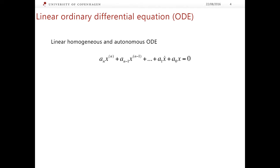This equation is homogeneous because the right-hand side of this equation is identically equal to 0. And this equation is autonomous because the coefficients aₙ, aₙ₋₁, and throughout to a₁ and a₀ are all constants which means they do not depend on time.